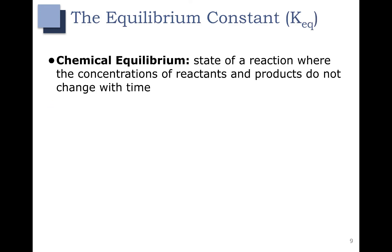Before we talk about what the equilibrium constant is, let's talk about chemical equilibrium. Chemical equilibrium is the state of a reaction where the concentrations of the reactants and the products do not change with time. That doesn't mean that there's no reaction happening. It just means that as the reaction is going back and forth, we still have the same amount of the starting materials as we do of the products.